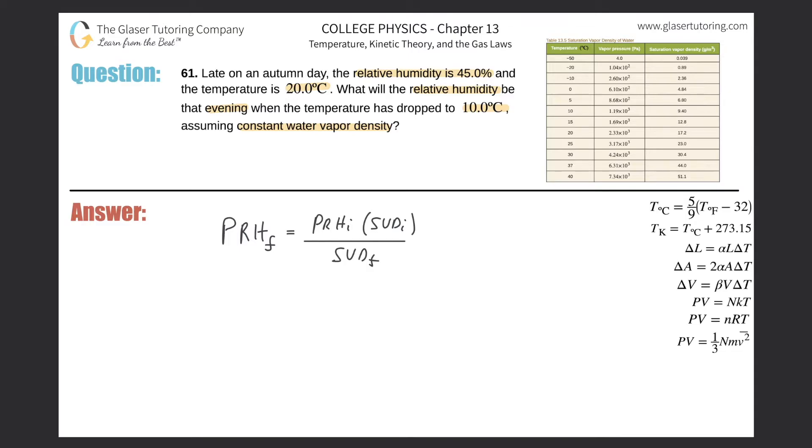So they tell us the relative humidity earlier in the day, that's 45%. So what I can simply do is start plugging in the values. So this is 45.0. Do not convert it to the decimal. And if you want to know why, check out video number 60.